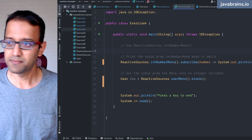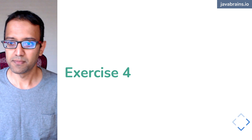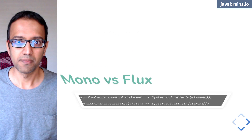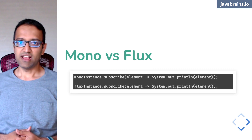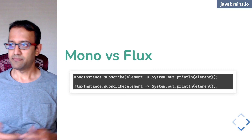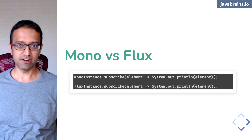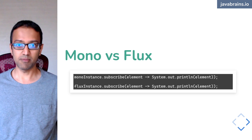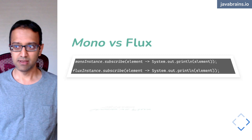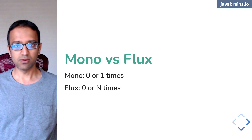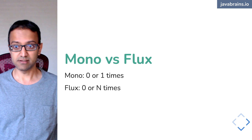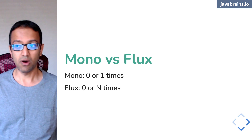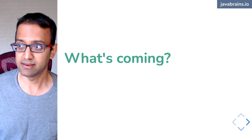We did exercise four — Mono versus Flux. No difference in the programming model, except that Mono can return zero or one item, while Flux can return zero or n items.